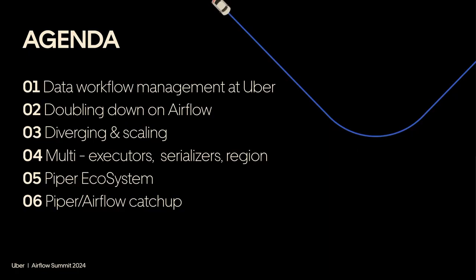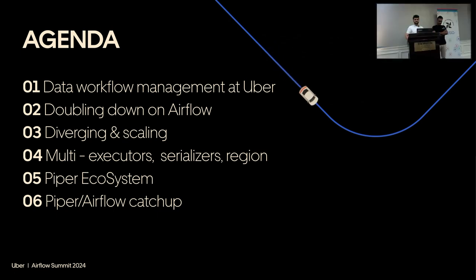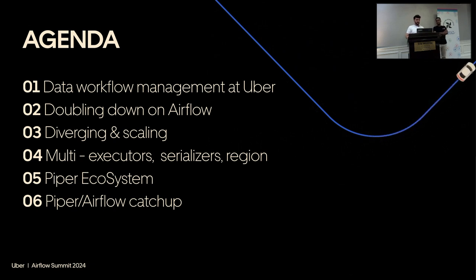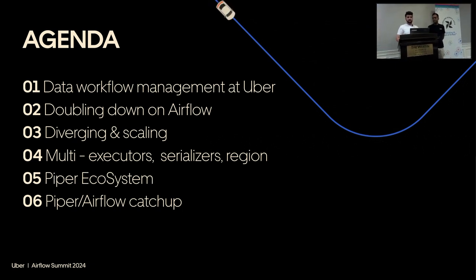The agenda for today is basically walking through how the data workflow management space looks at Uber, how it evolved at different stages, and the reasoning — why did we go from this architecture to this architecture? In the end, we'll do a comparison between features we have today and what's coming in Airflow, some features we are lagging behind on. And what is the plan ahead — we started with Airflow, we are at different points, so how do we see the future?